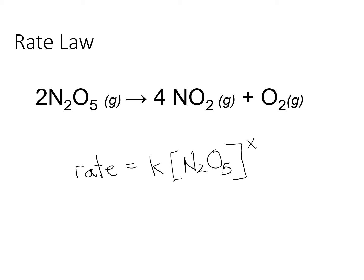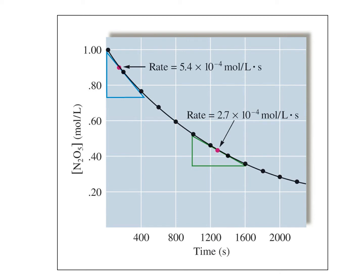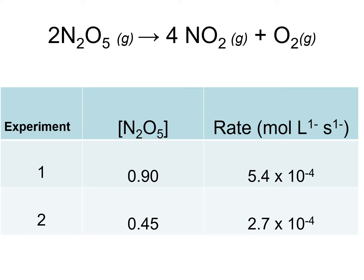Today we're going to look at this reaction, and the rate was determined from an experiment. You might recognize this graph from our last lecture. We have two different rates at two different times, and we know the concentration as well as the time. The table gives us the two samples in our experiment and the two rates.